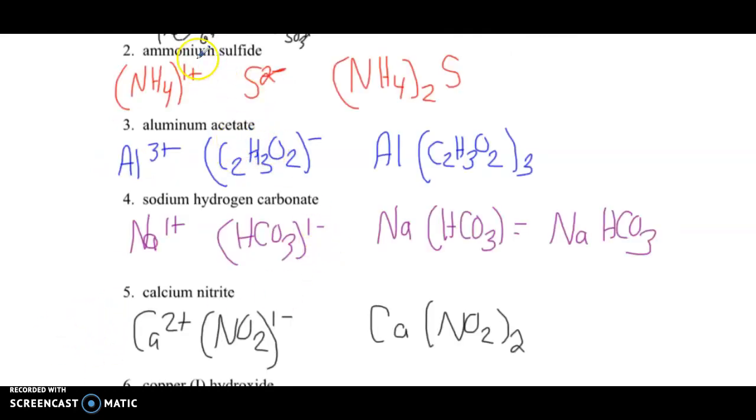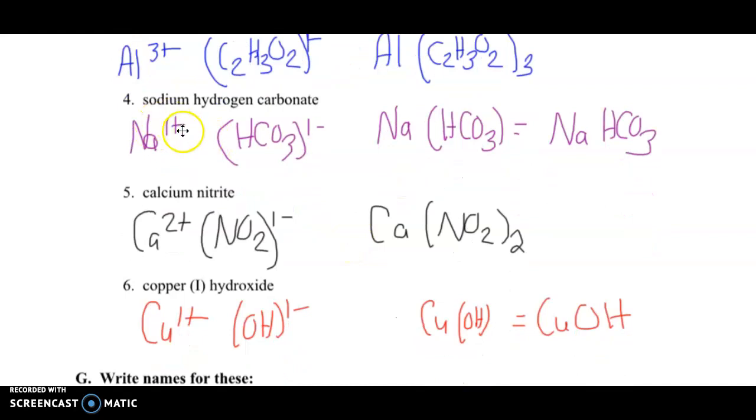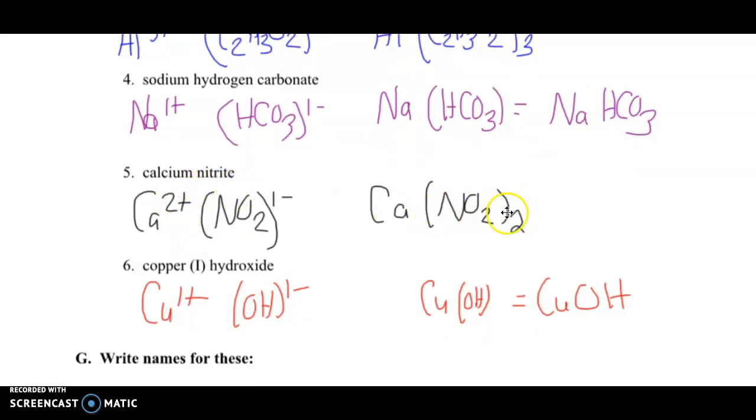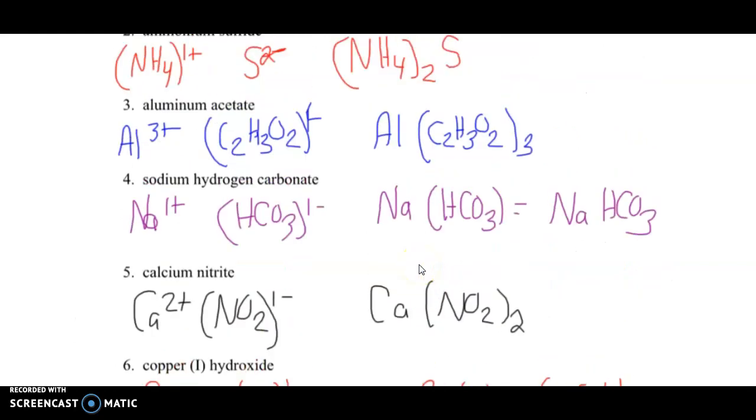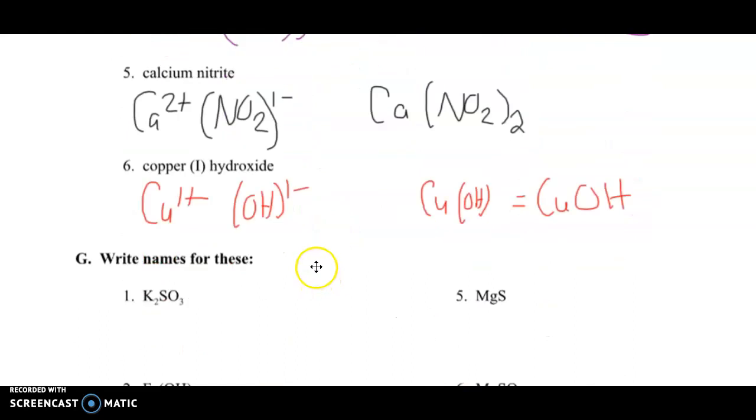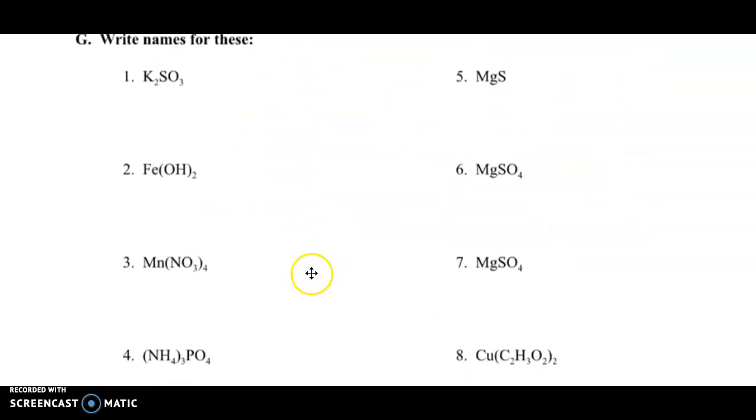Good work, ChemStars. Let's check your work. Ammonium, NH4 1+, sulfite, S 2-. To make a compound, that formula is (NH4)2S. We need the parentheses because there are multiple of the ammonium cations. Aluminum acetate—aluminum is always a 3+, acetate is C2H3O2-, 1-. Do our little crisscross. Here's your final formula. You need to keep that 3 on the outside of the parentheses because there are multiple of that polyatomic ion. Then we've got sodium hydrogen carbonate. There's just one of each, so we can drop those parentheses. Calcium nitrite—we do need to keep the parentheses because we need two nitrites. And then copper(I) hydroxide, you can drop the parentheses again.